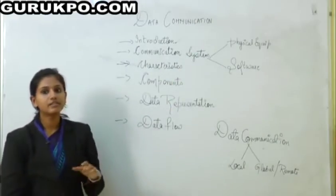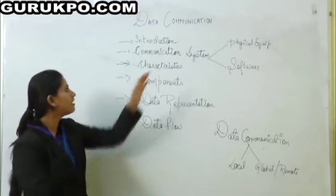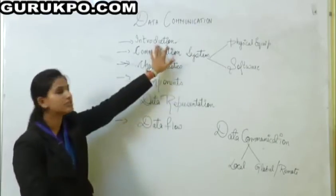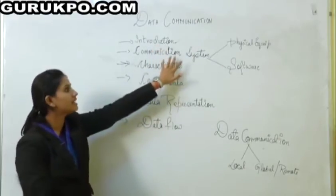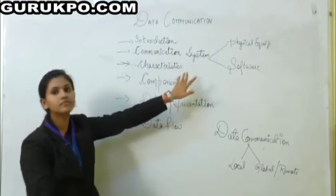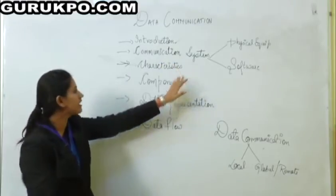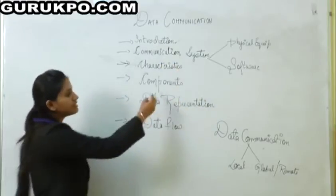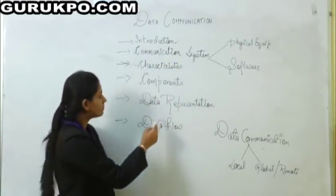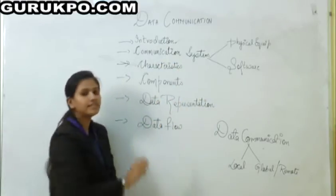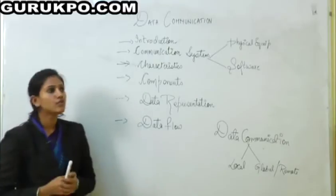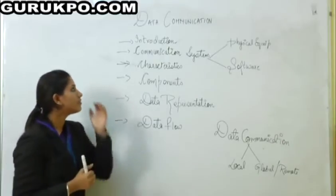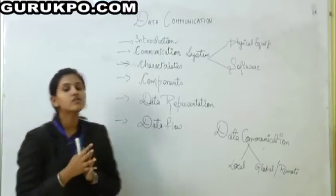Today we are discussing about data communication. We are covering the topics: introduction, communication system, characteristics, components, data representation, and data flow. Starting from the first topic, that is introduction.